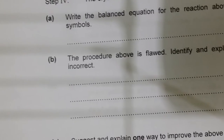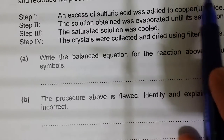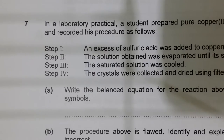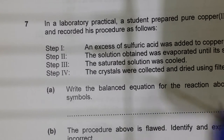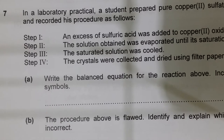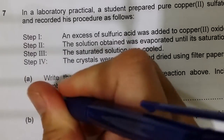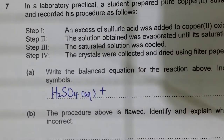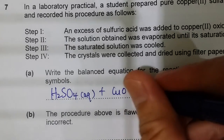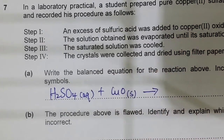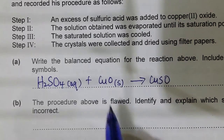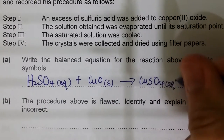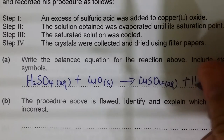Question seven involves preparing pure copper sulfate crystals. First, write a balanced equation for the reaction: CuO + H₂SO₄(aq) → CuSO₄ + H₂O. This is an acid-base reaction between copper oxide and sulfuric acid, producing a salt and water.